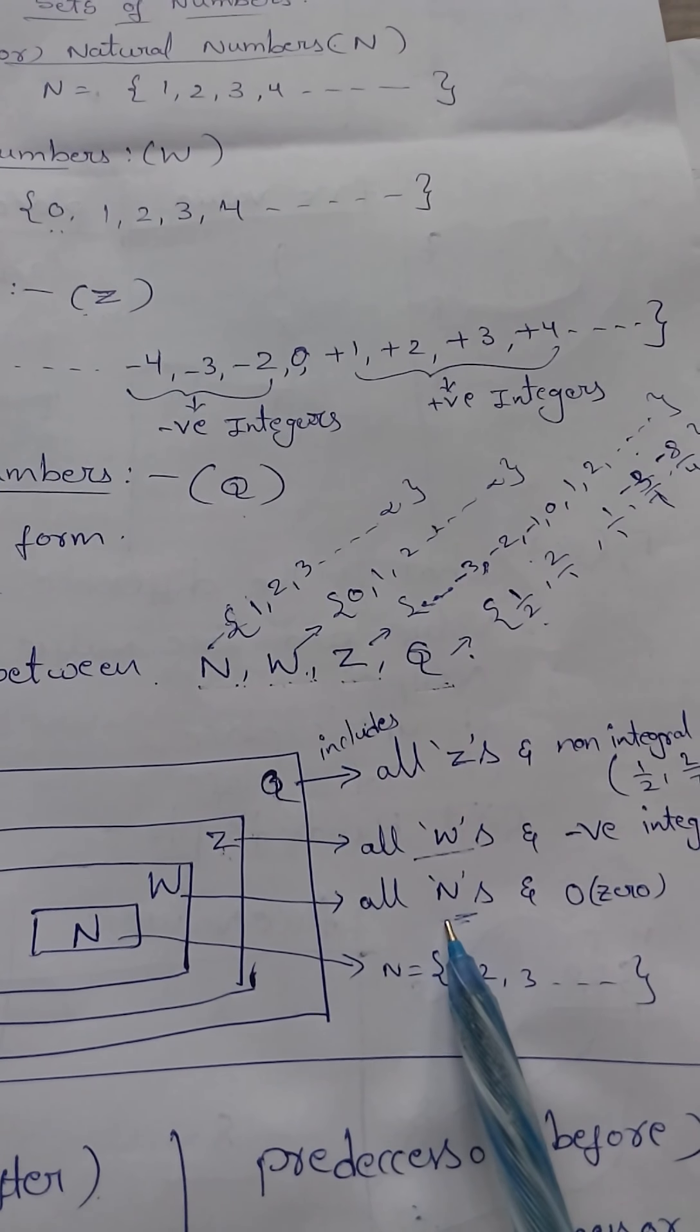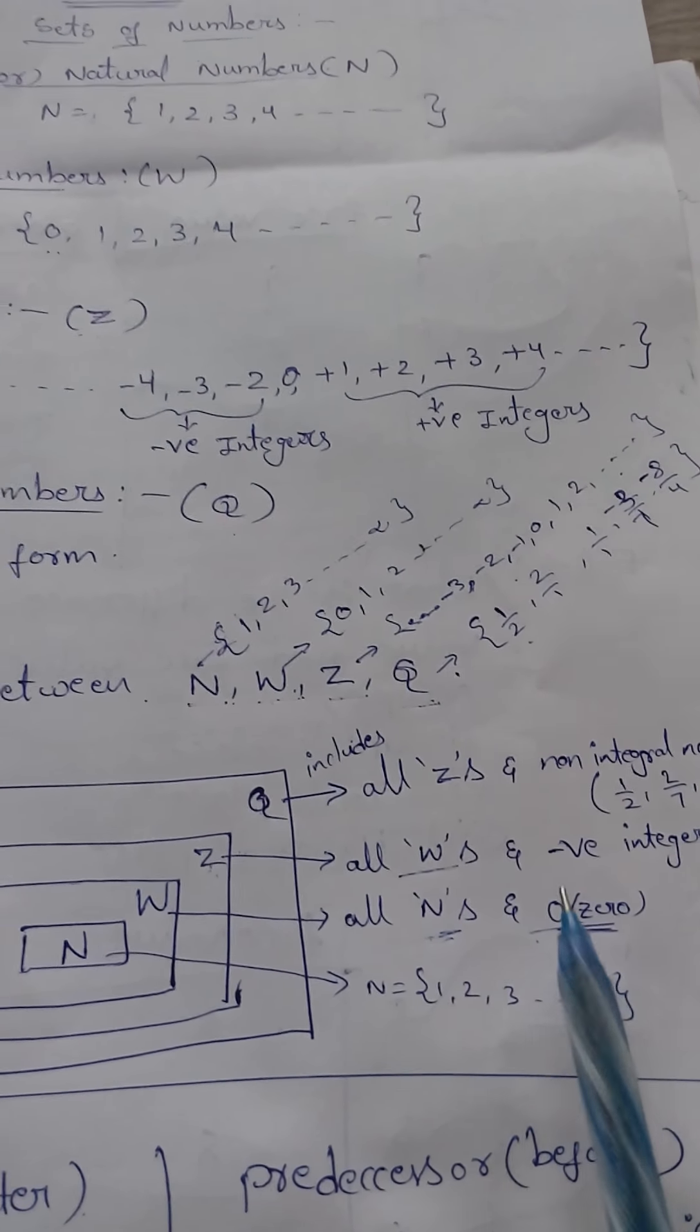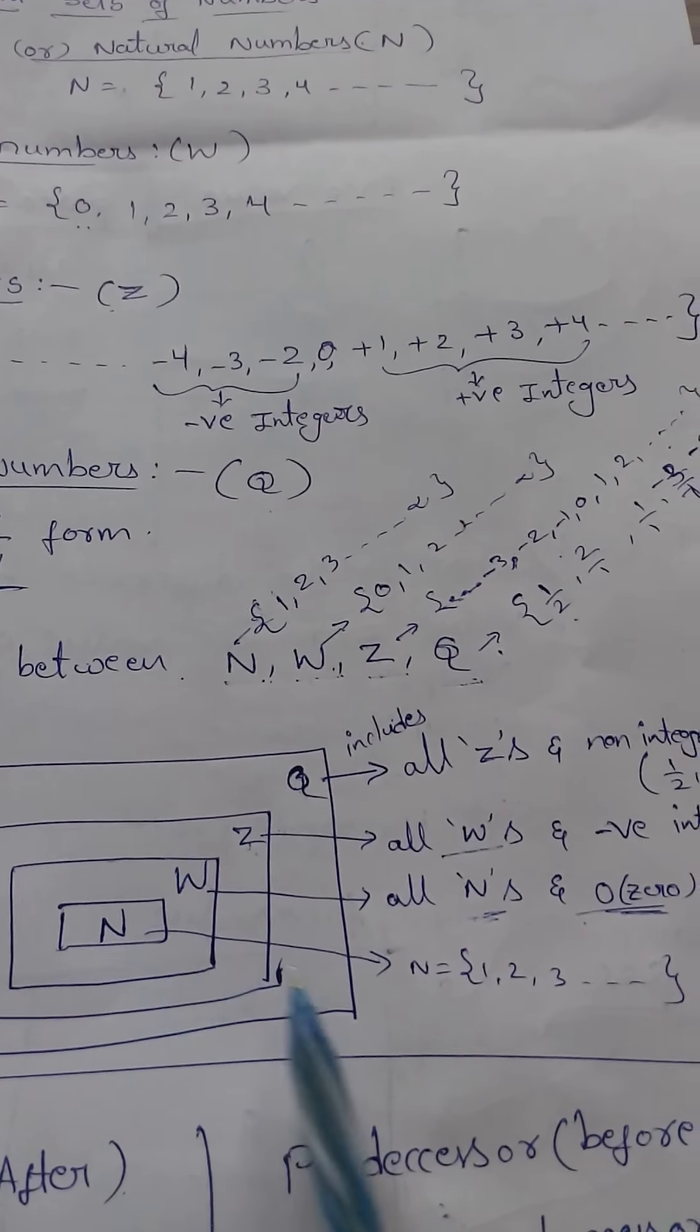Whereas W includes, W means what? Whole numbers. Includes all N's, all natural numbers, and 0.